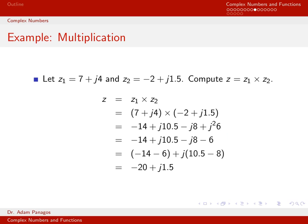On the next line, I simplify j squared. Because j is the square root of negative 1, j squared gives a minus sign, so 6j squared turns into negative 6. Now combining like terms: the real components are negative 14 and negative 6, giving negative 20. The imaginary components are 10.5 and negative 8, giving j1.5. So the product is negative 20 plus j1.5.